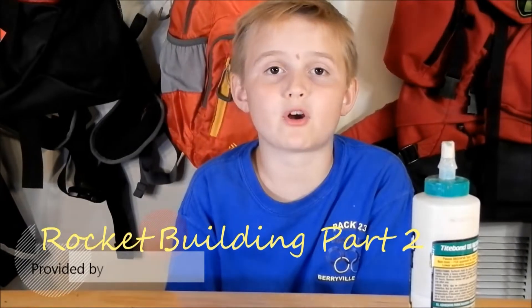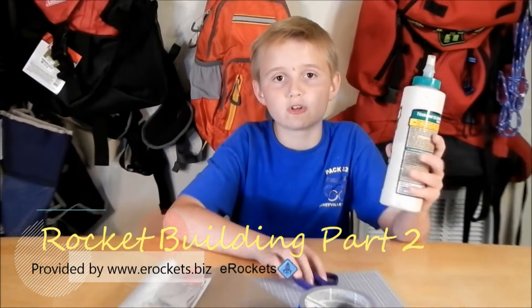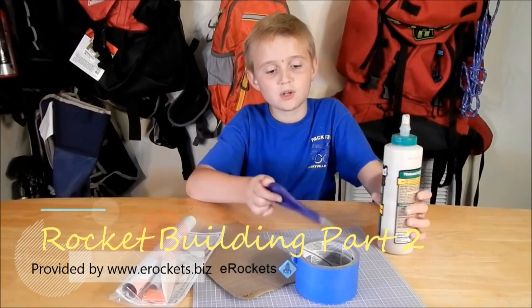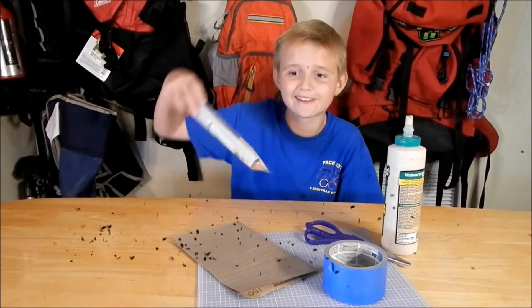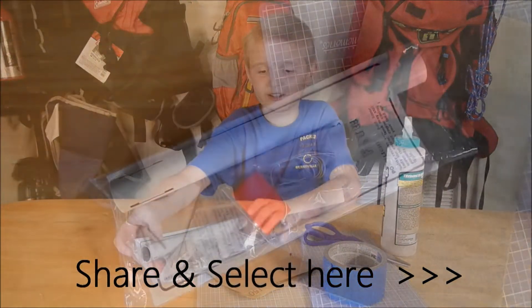So guys, welcome back to part two of our rocket. What we need for building a rocket is glue, scissors, tape, sandpaper, and of course a rocket. So let's build this thing. Look at this pack that E-Rocket sent to us.